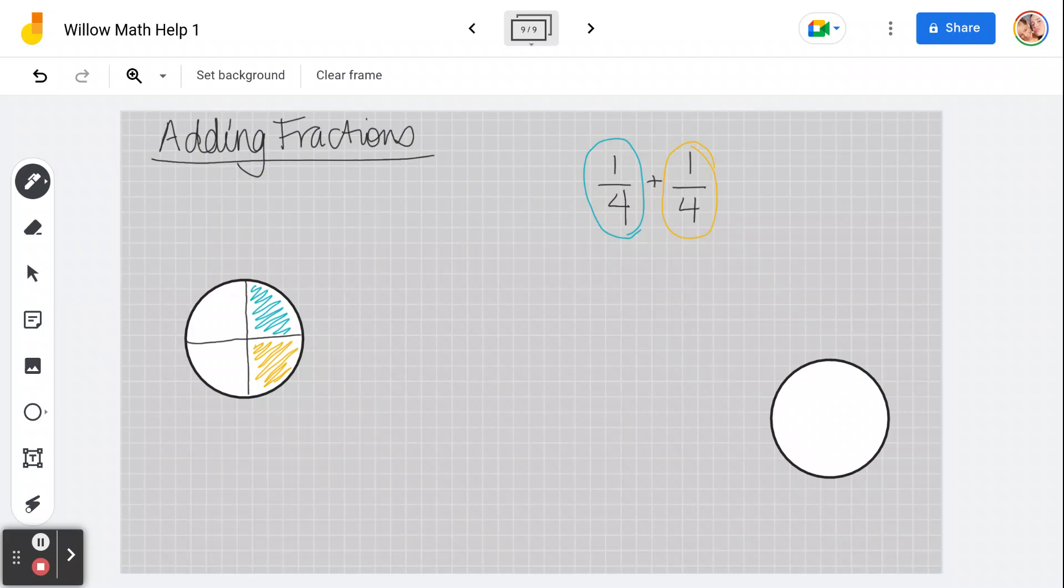That's going to equal two quarters. Do you see how I add the two top numbers to get here, but I don't add these numbers. This just comes right over here. This is called your numerator. This is your denominator.